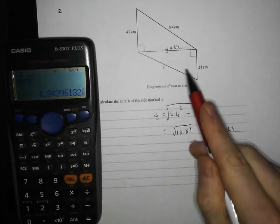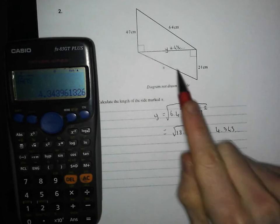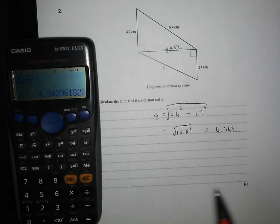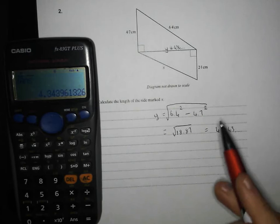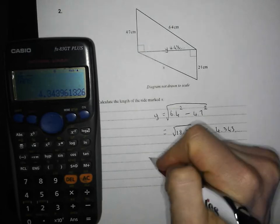Now I'm going to work out x. Now x is the hypotenuse of this triangle down here, so it's going to be an added one. Square it, square it, add it, square root it.